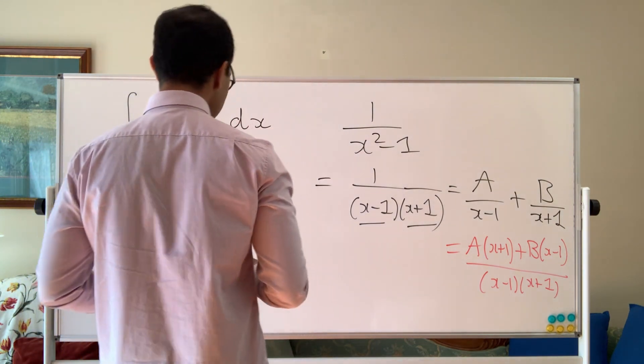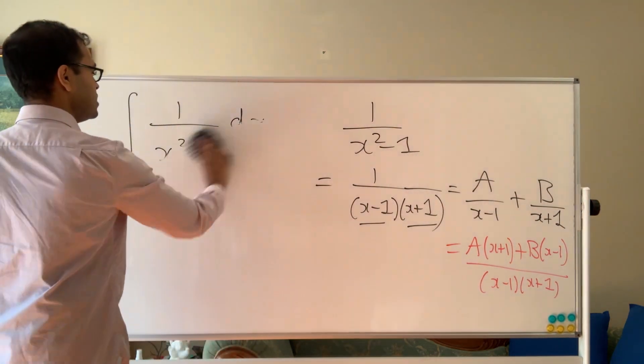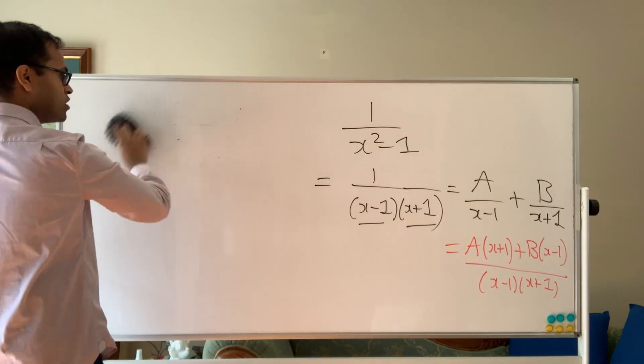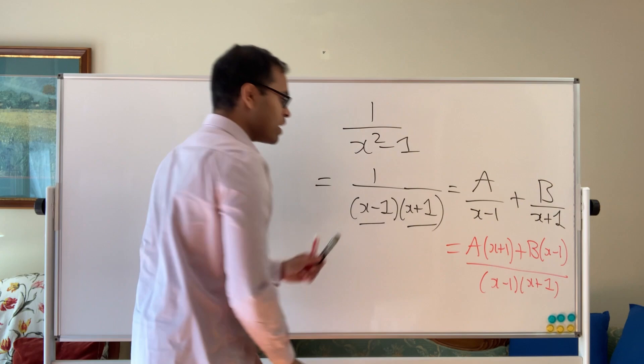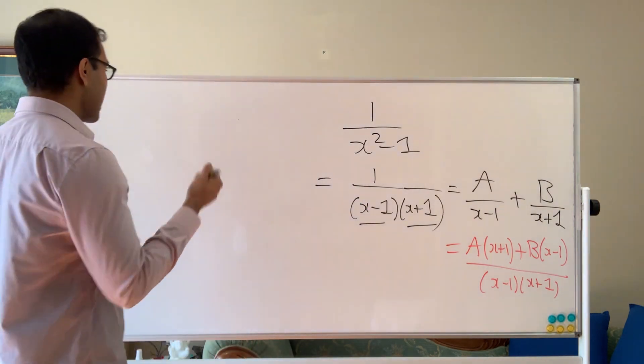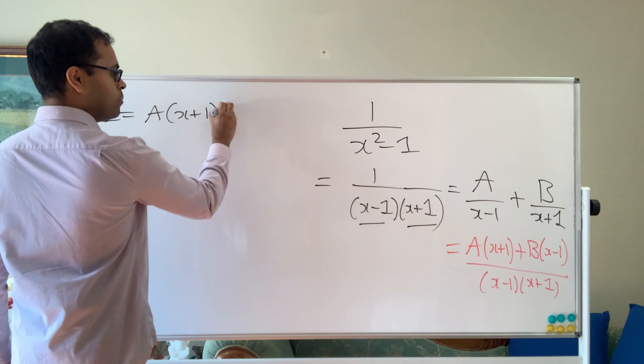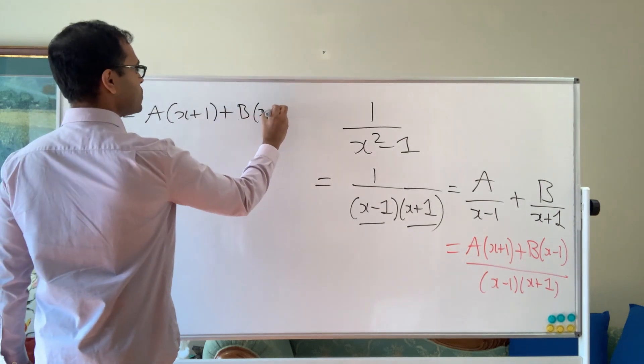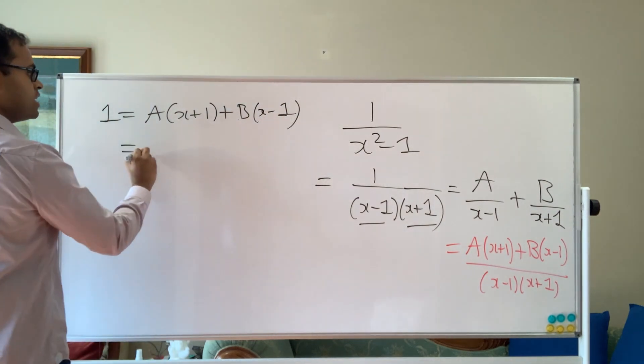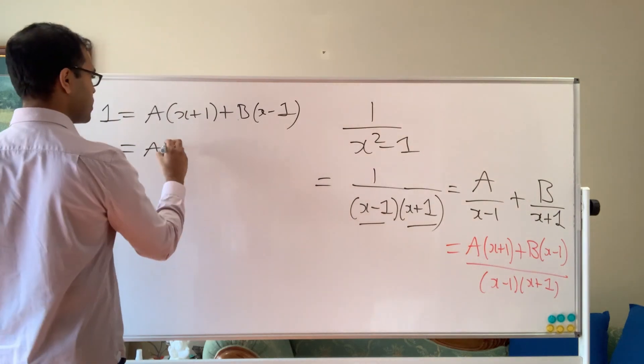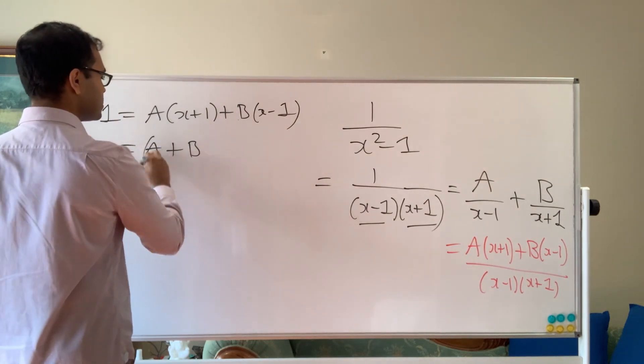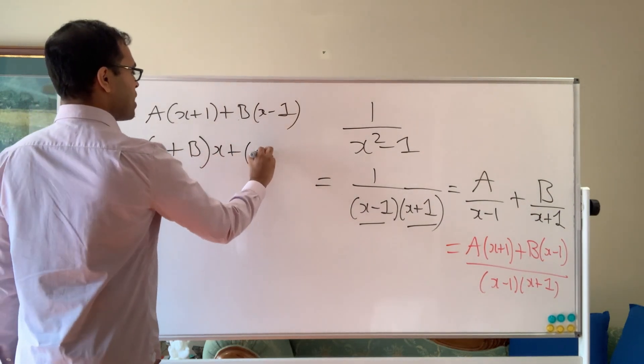So the right-hand side, if we add up the fractions, it's going to be A times x plus 1 plus B times x minus 1 divided by x minus 1 times x plus 1. So the denominators are matching up. We want the numerators to match up when we solve for A and B. So let's try to do that. So the numerator is going to be A times x plus 1 plus B times x minus 1. That should equal the numerator on the left-hand side. So we get an equation 1 equals A times x plus 1 plus B times x minus 1. And therefore, this is going to equal to, you can just put all the x terms, so you're going to get A plus B times x plus A minus B.